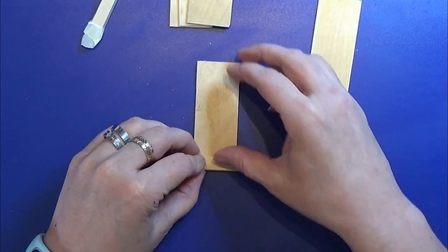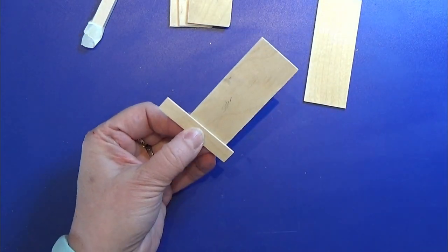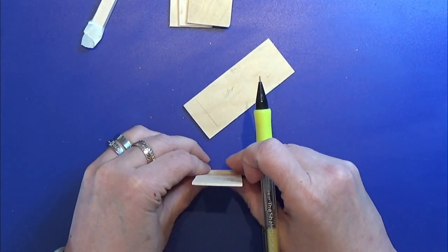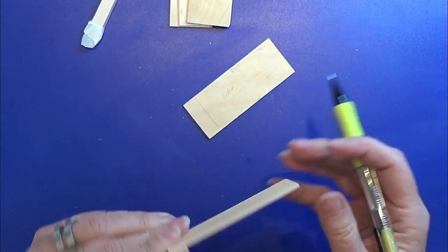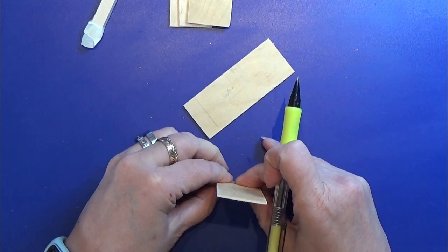I'm using the socket piece to make a line here at the bottom of these side pieces so that I know where to glue the shelf and the socket.